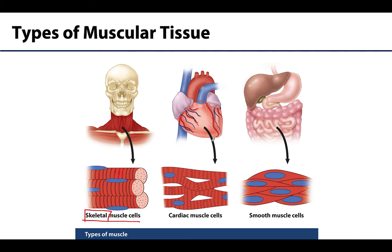Next, there is cardiac muscle, which is going to be unique to the heart, forming most of the muscular walls of the heart. This muscle is also described as striated, which you can see here, but these are going to be considered involuntary — the actions are not under conscious control.